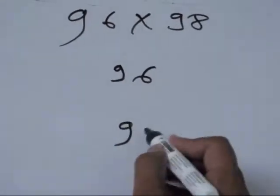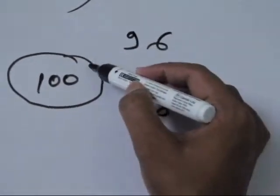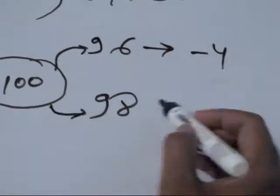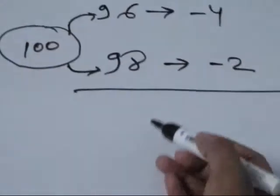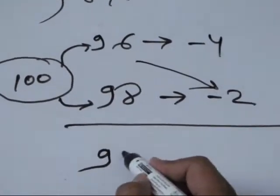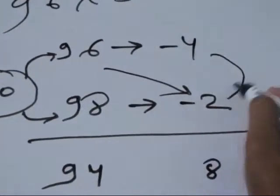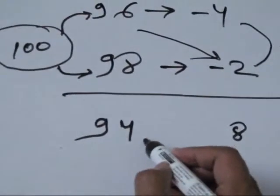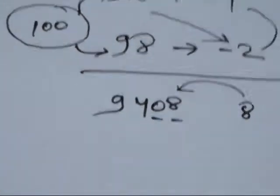Now: ninety-six into ninety-eight. The base is hundred because these numbers are near to hundred. How much away from hundred is ninety-six? It is minus four. And how much away is ninety-eight? Minus two. So the first step is add the corners: ninety-six minus two equals ninety-four. You will get the same result with ninety-eight minus four. Now in the second stage, multiply minus four into minus two — you will get the answer eight. There are two places vacant, so fill it with zero eight. The answer is 9408.